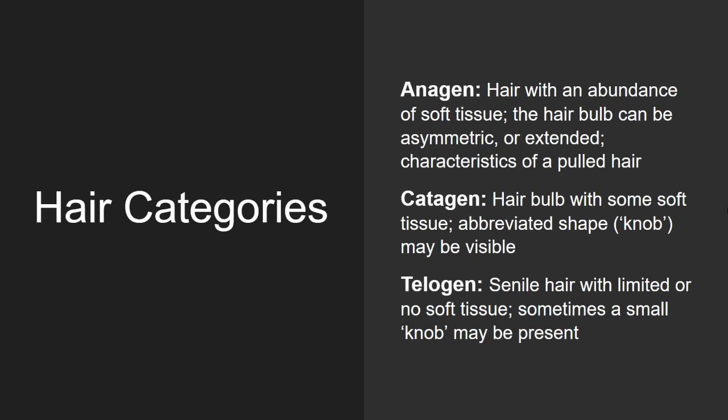Catagen hair can come from natural shedding. It has some soft tissue and often has what I identified as a knob. Telogen hair is also from natural shedding. It has little or no soft tissue and sometimes a very faint knob.